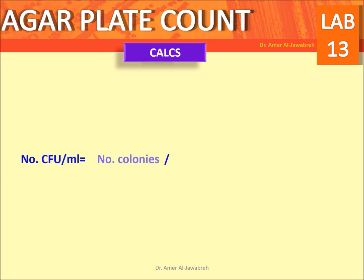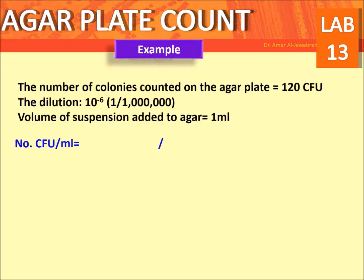Calculations. Equation: number of CFU per ml equals number of colonies divided by dilution times volume of suspension. Example: the number of colonies counted on the agar plate equals 120 CFU. The dilution is 10 to the power minus 6. Volume of suspension added to the agar is 1 ml.